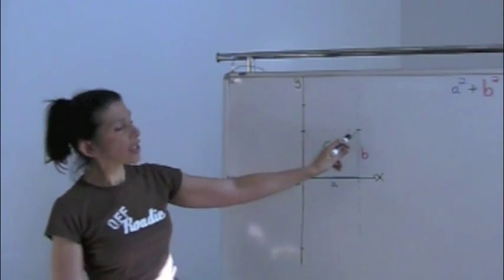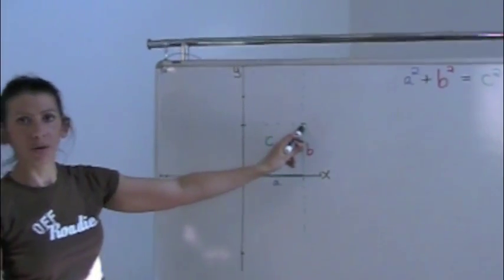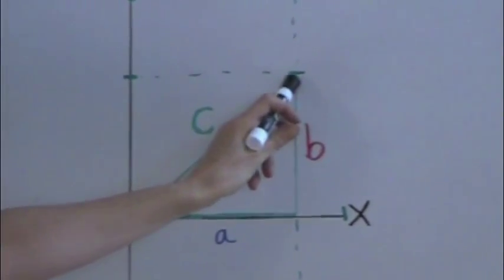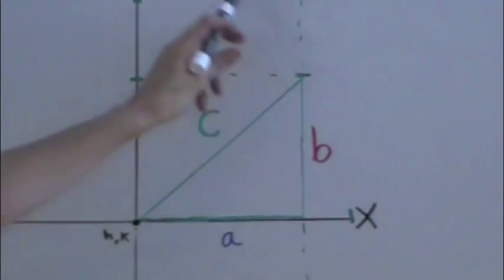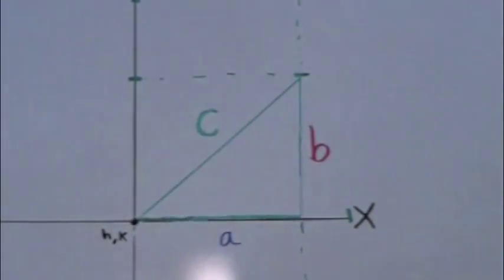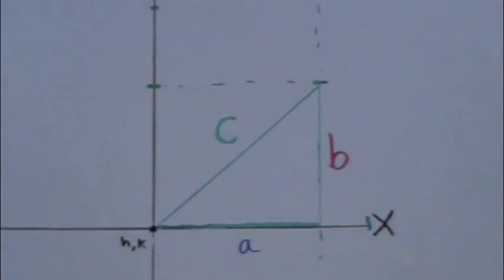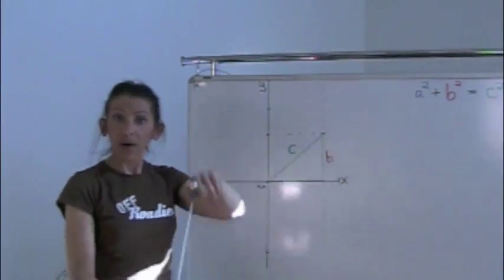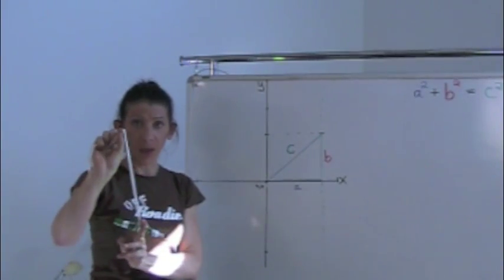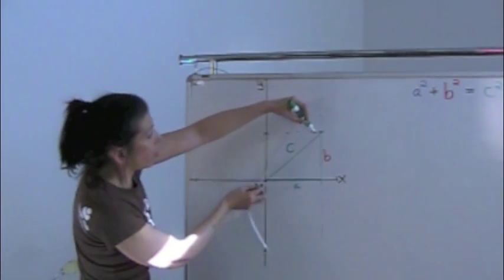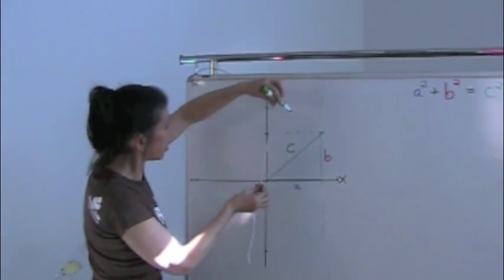But first, let's suggest that this hypotenuse here is actually the radius of a circle. So what would that look like if a circle was to encompass this and it was of radius c? Let's see what that looks like. So the one thing that we know about circles is that no matter where you go along the circle, if you have the focus in the very middle, you have the center, you know that the radius is always going to be exactly the same.